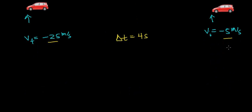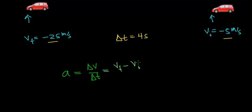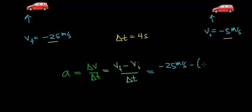To find this object's acceleration, we go back to the definition: acceleration is the change in velocity per change in time — that is, how fast the velocity changes. That works out to be the final velocity minus the initial velocity, divided by the time it takes to change velocity. In this case, the final velocity is negative 25 meters per second, minus the initial velocity of negative 5 meters per second, divided by 4 seconds.